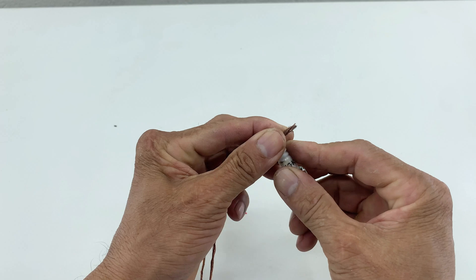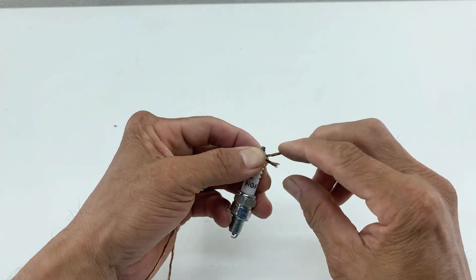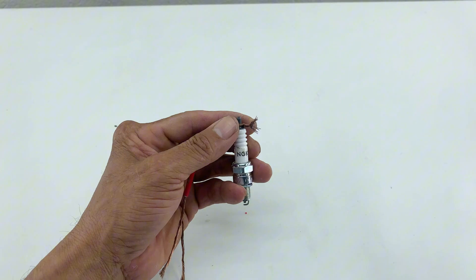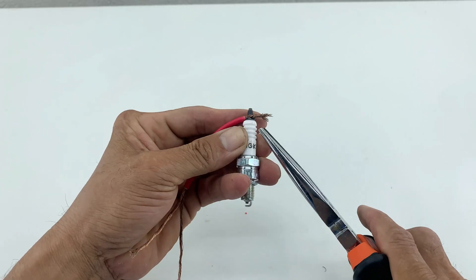Now, I'll thread one end of the stripped red wire through the spark plug's casing and wrap it securely around the center electrode. This creates the primary electrical connection.